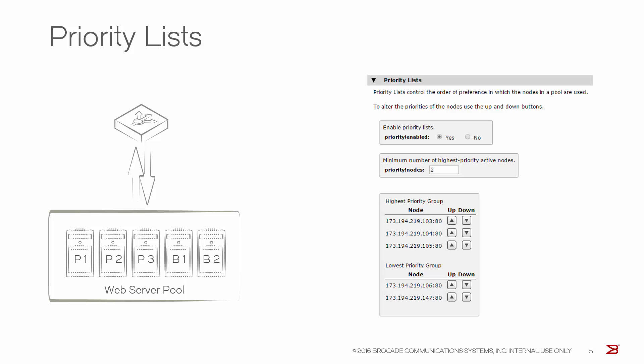If a second primary node fails, only one node is left in the higher group. Because you've configured a minimum of two servers that must be available, the traffic manager will start to send requests to all machines in the backup group. Now requests are being handled by the remaining priority node and backup one and two.